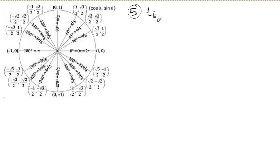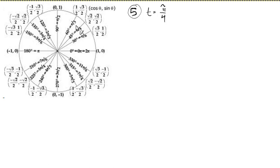So it says there's this T, and this T is pi over four, and it's clearly radians because there's no degrees symbol there. They want us to find the point (x, y) on the unit circle that corresponds to this real number T. So pi over four radians is 45 degrees. The (x, y) is root two over two, and root two over two.